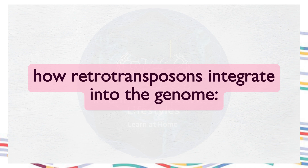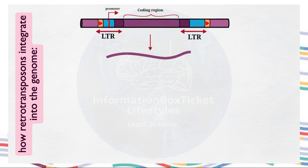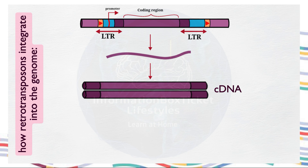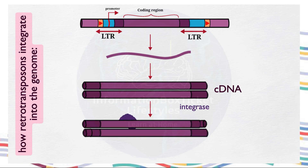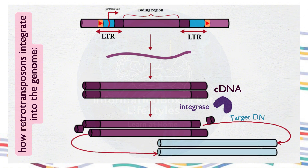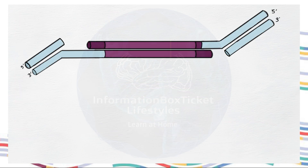Now let's see how retrotransposons integrate into the genome. First, the LTR-retrotransposon generates mRNA, which is reverse transcribed with the help of reverse transcriptase to form cDNA. This cDNA is then processed by the enzyme integrase, which clips the ends, creating open hydroxyl groups at the 3' ends. These hydroxyl groups can then attack the target DNA, facilitating the integration of the retrotransposon. This is how they integrate into the target DNA.